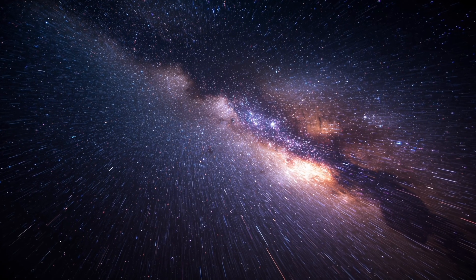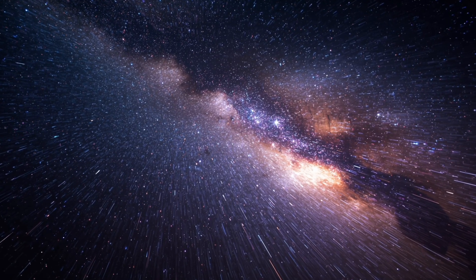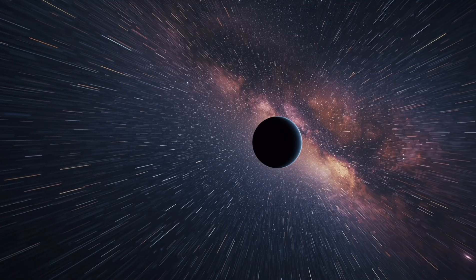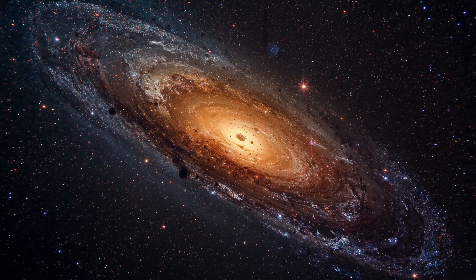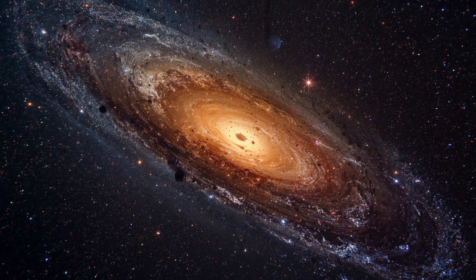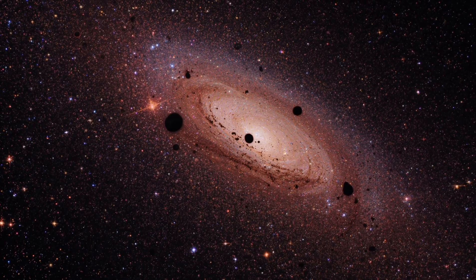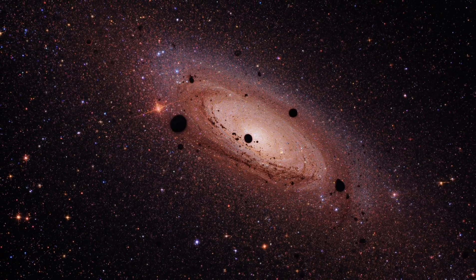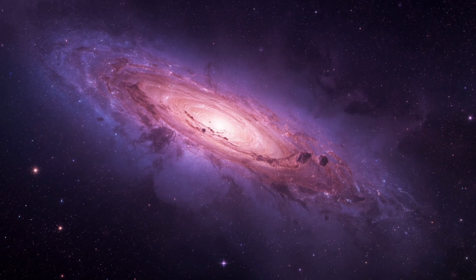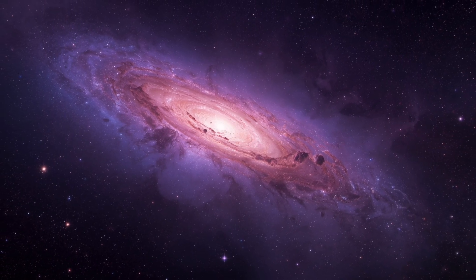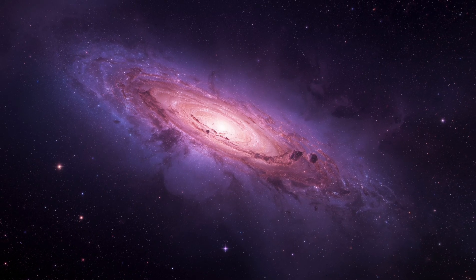While much attention is given to the universe above, the regions below our solar system, meaning in the galactic plane and the structures surrounding the Milky Way, also hold shocking secrets. Our solar system resides roughly 27,000 light-years from the galactic centre, moving at over 828,000 kilometers per hour in orbit around it. Beneath this path lies the dense core of our galaxy, home to millions of stars, enormous black holes, and regions of extreme radiation.